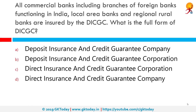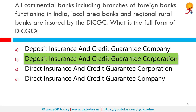All commercial banks including branches of foreign banks functioning in India, local area banks and regional rural banks are insured by DICGC. What is the full form of DICGC? The correct answer is Deposit Insurance and Credit Guarantee Corporation. DICGC is a subsidiary of the Reserve Bank of India and was established on 15 July 1978 under the Deposit Insurance and Credit Guarantee Corporation Act 1961, for the purpose of providing insurance of deposits and guaranteeing of credit facilities. DICGC insures all bank deposits such as savings, fixed, current, and recurring deposits for up to a limit of Rs. 1,00,000 of each deposit in a bank.